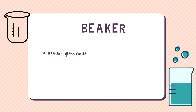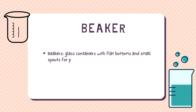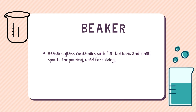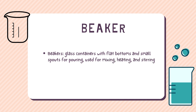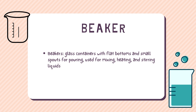A beaker. A beaker is a glass container with a flat bottom and a small spout for pouring. It is used in the science lab for mixing, heating, and stirring liquids. Beakers come in various sizes and are shaped like cylinders.